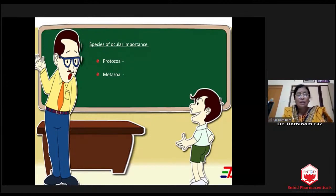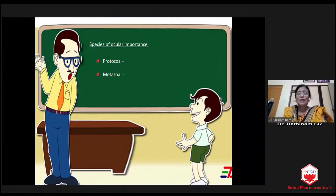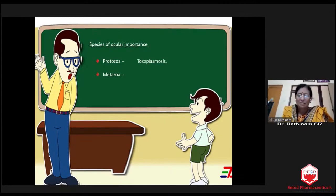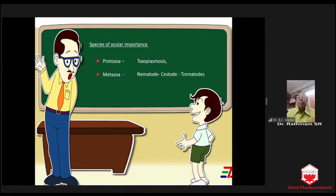Before that, we will go back to MBBS class where our third-year teachers were talking about protozoa and metazoa. The protozoa includes toxoplasmosis, but we are not going to cover that here because it is a separate subject by itself. In metazoa, we have three things: nematode, cestode, and trematode.